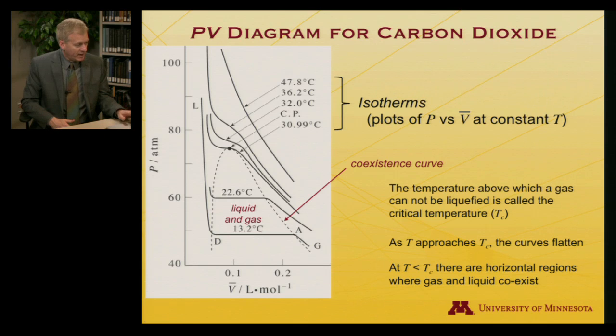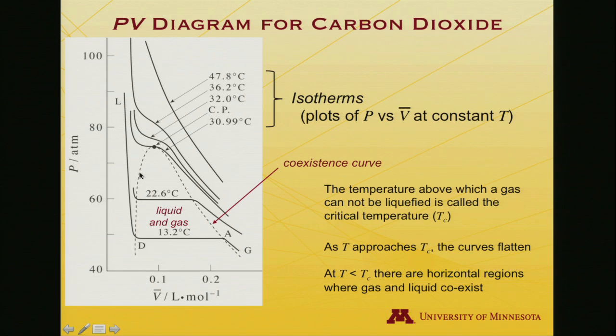Notice what happens as I trace the coexistence curve up. At some point, it turns over. There is a point where one isotherm just kisses the very top of the coexistence curve. That is called the critical temperature—the temperature above which you cannot liquefy a gas anymore. Doesn't matter how much you press on it, it will never be in the liquid phase.